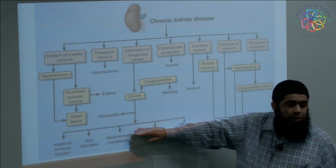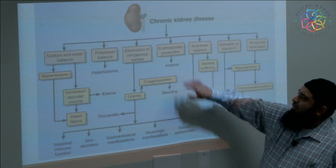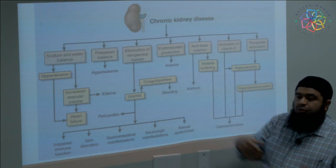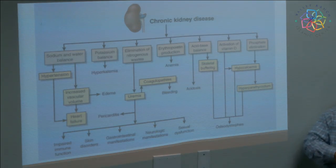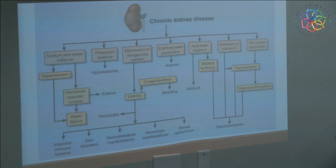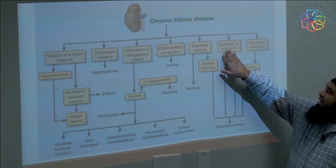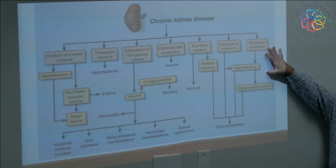If these complications cannot be managed medically, then you go on dialysis. If erythropoietin production is insufficient and hemoglobin is low, I have to give exogenous EPO to keep hemoglobin up. Same with vitamin D balance and phosphorus metabolism.